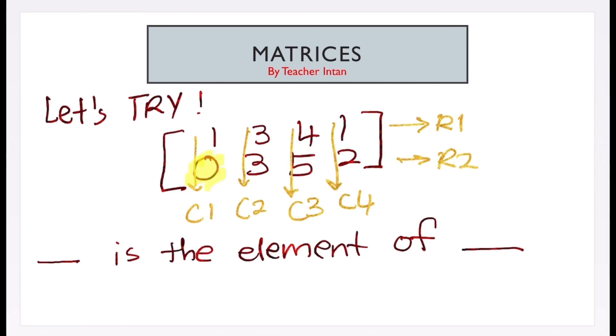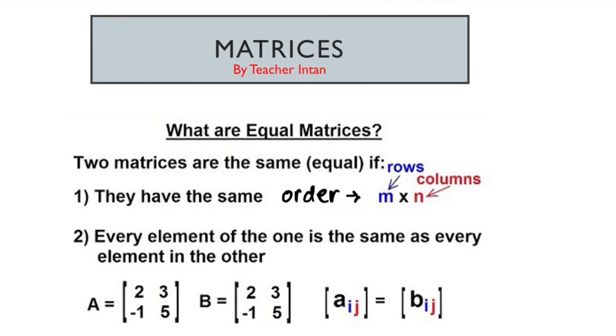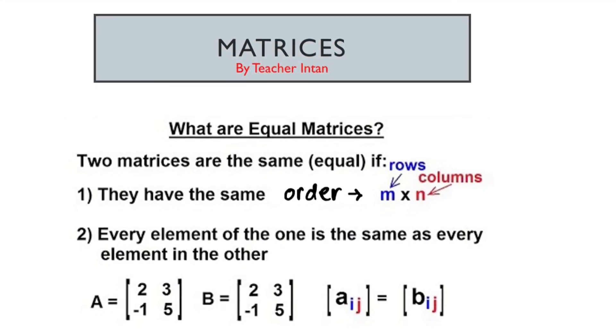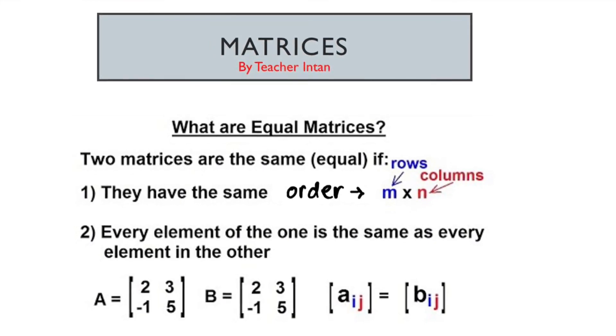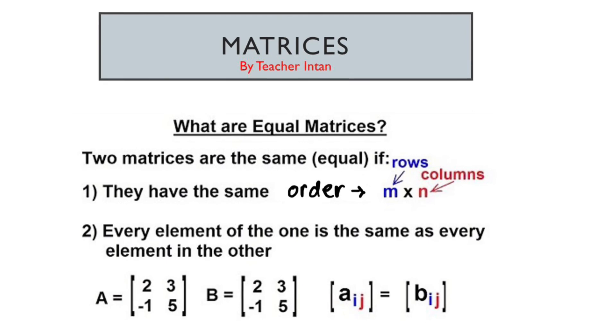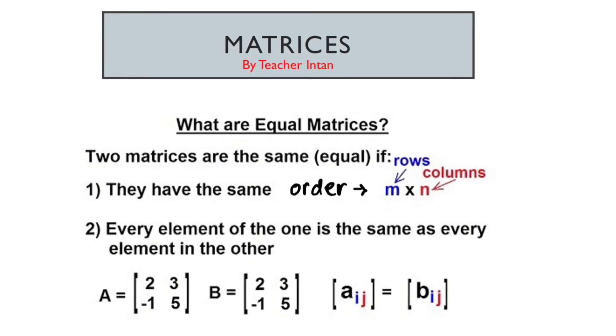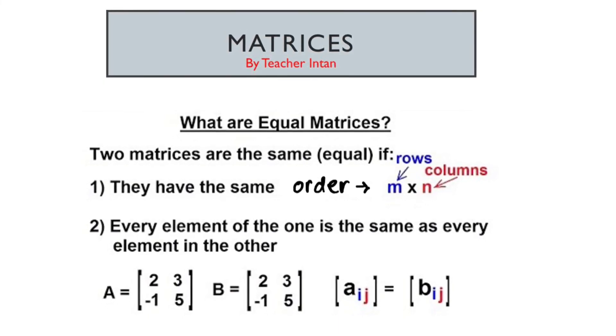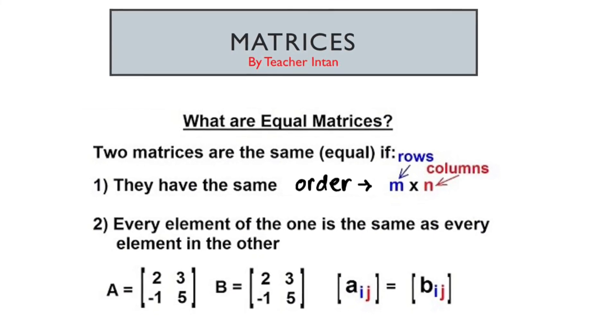So, next, we have a look at equal matrices. Equal. Sama. For equal matrices, for them to be equal, number 1, they need to have same order. It has same rows times column.